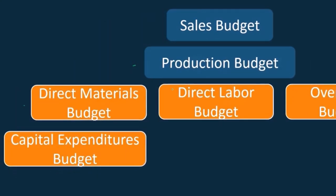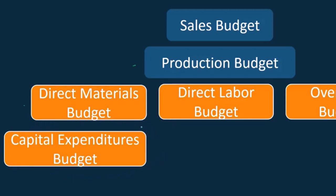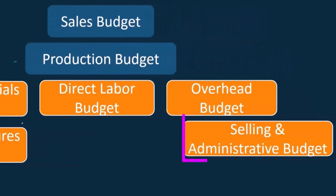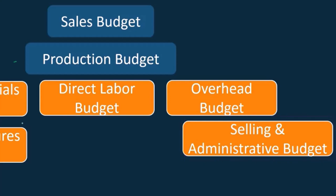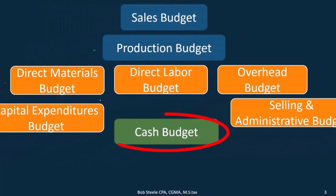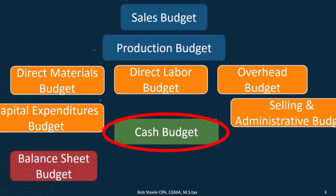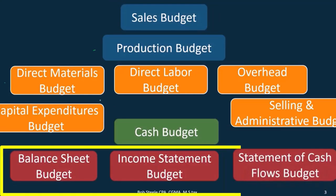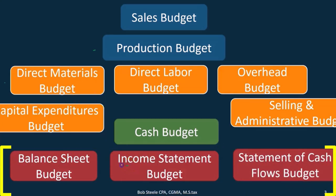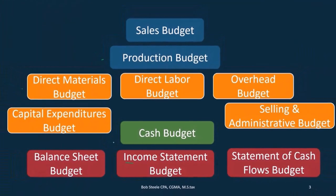Capital expenditures — do we want to buy new, larger pieces of equipment? We need to plan whether we have the cash flow and whether we can finance large expenditures. Then there's the selling and administrative budget, which are period costs. These are usually more fixed in nature rather than variable, so we can look at what happened last time and project it forward. Then we do the cash budget, and finally we can think about our budgeted balance sheet, budgeted income statement, and budgeted statement of cash flows.